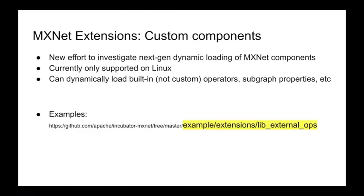Finally, a sneak peek at things we're working on. We're leveraging this dynamic library loading functionality in MXNet to modularize its different parts. We're looking at ways to simplify the MXNet build by building different components separately and loading them together at runtime, or making it easier for users to get the specific configuration of MXNet they want — for example, distributing a core portion of MXNet and then helping users download specific parts for GPU execution. Take a look at the lib_external_ops example, and it would be great to have you contribute to this project.